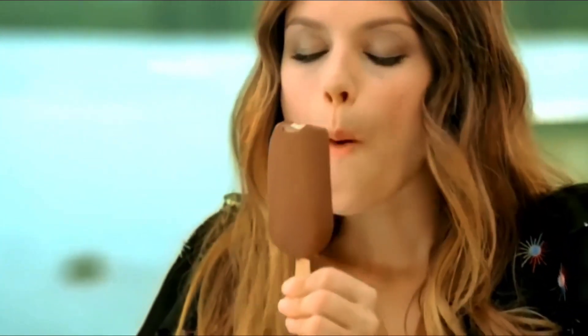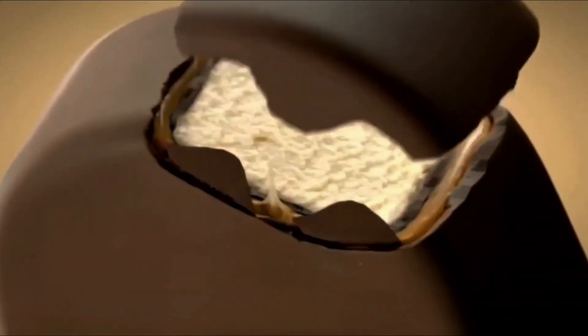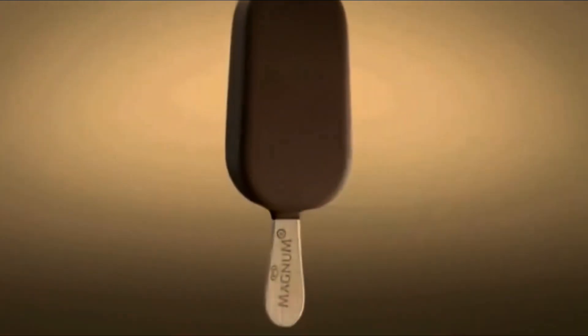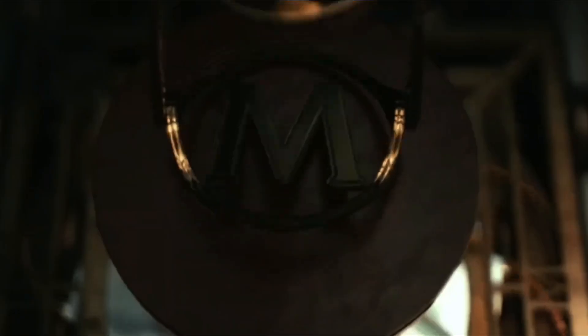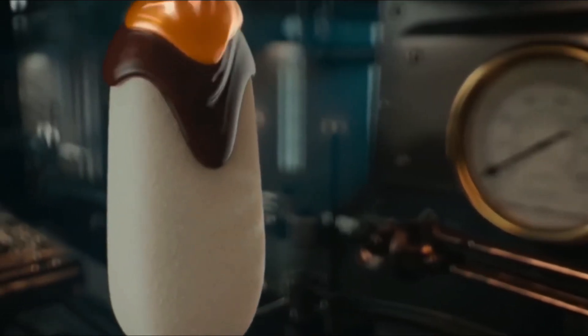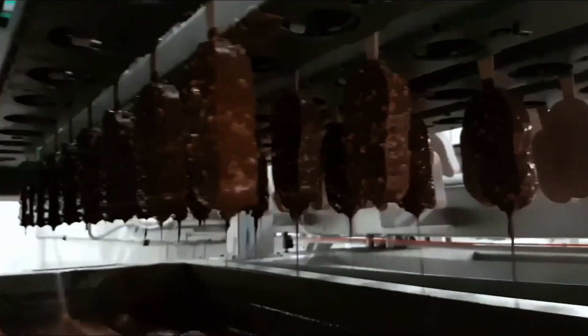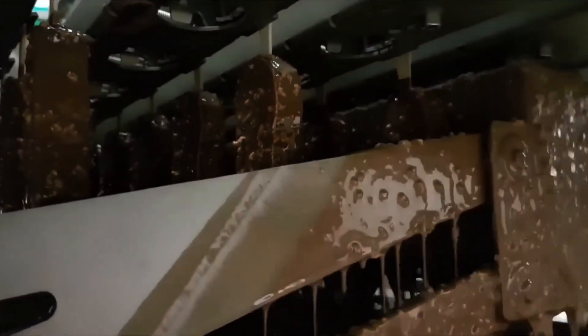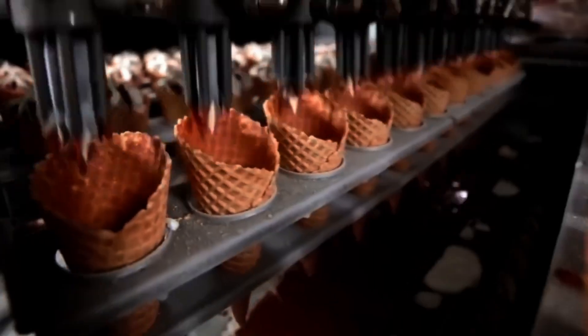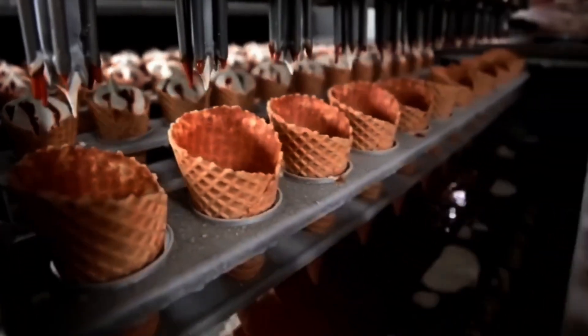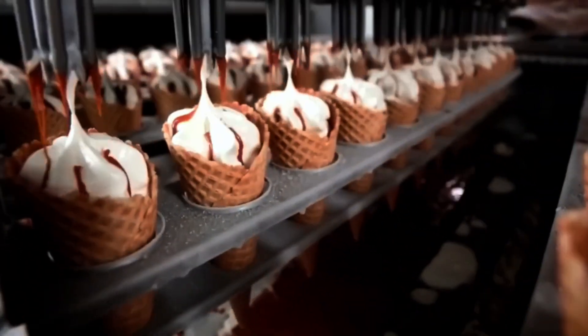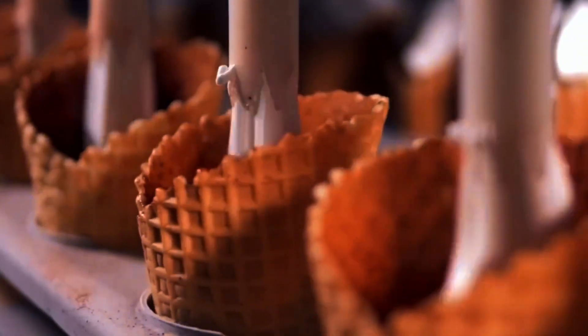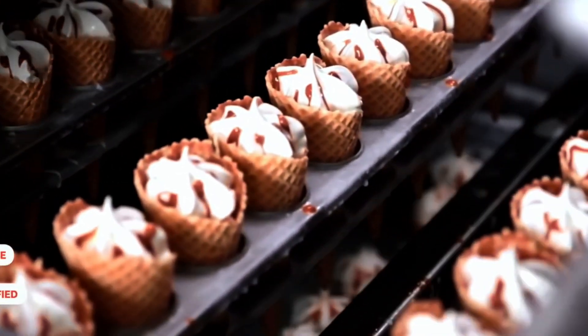But that's not the end. If the ice cream is supposed to be coated in chocolate, like a classic ice cream bar or sandwich, it moves on to the next stage. Here, the ice cream is dipped into baths of melted chocolate. The coating temperature is about 30 degrees Celsius, 86 degrees Fahrenheit. Everything happens in a flash. The ice cream is immersed for just a moment, then instantly hit with a stream of cold air. The result is a thin, crisp shell that coats every piece with perfect uniformity.